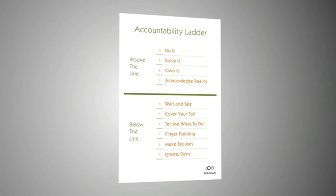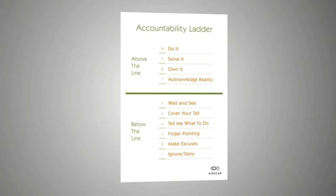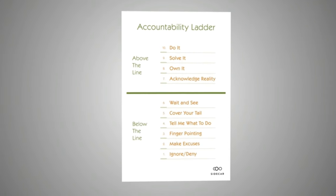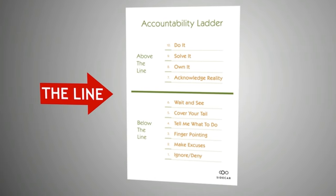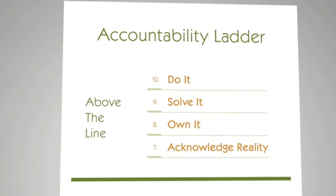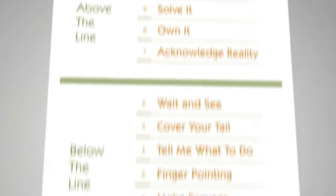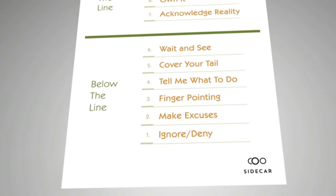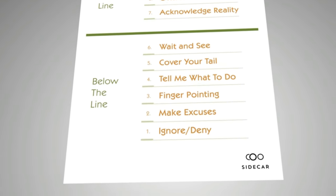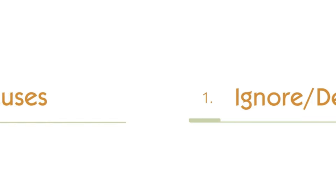As you look at the accountability ladder, we always want to operate above the line. There are 10 different statements: 7 through 10 are above the line, and 1 through 6 are below the line. Let's cover the below-the-line statements first. Number 1 is to ignore or deny a situation — just assuming somebody else is going to handle it.